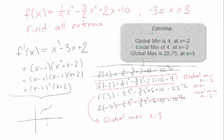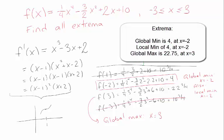So our extrema are: at minus 2 we have a local min and a global min, and at 3 we have our global max, and that's it.